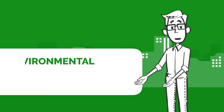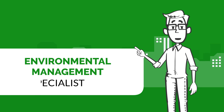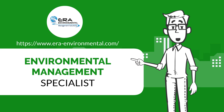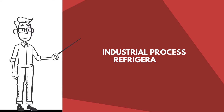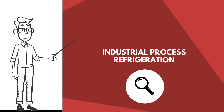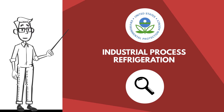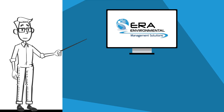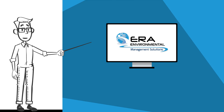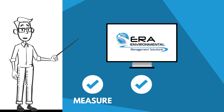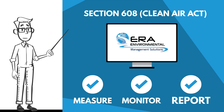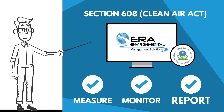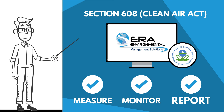Hi, I'm Doug, an Environmental Management Specialist at ERA Environmental. Industrial process refrigeration is heavily monitored by the EPA. Therefore, you should have systems and controls in place to measure, monitor, and report your compliance for Section 608 of the Clean Air Act.